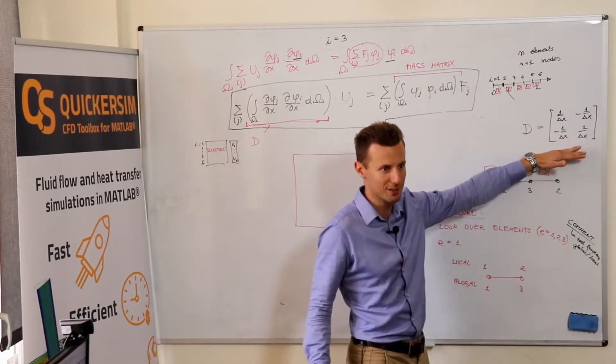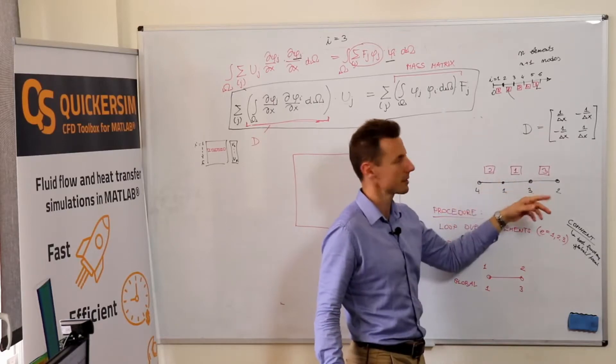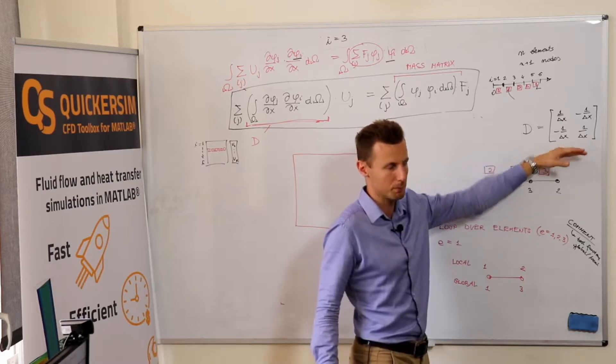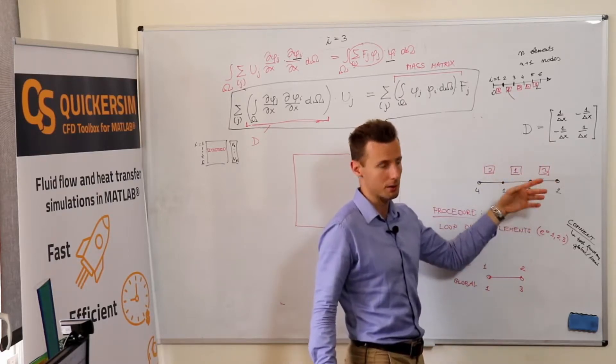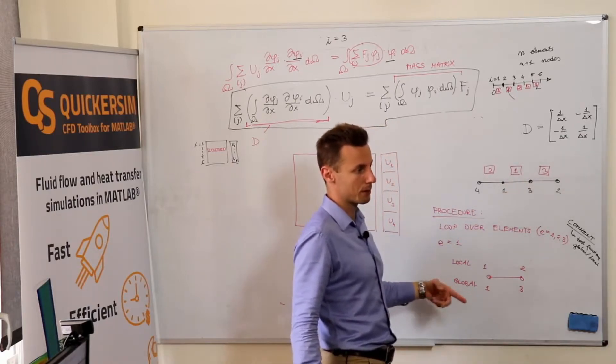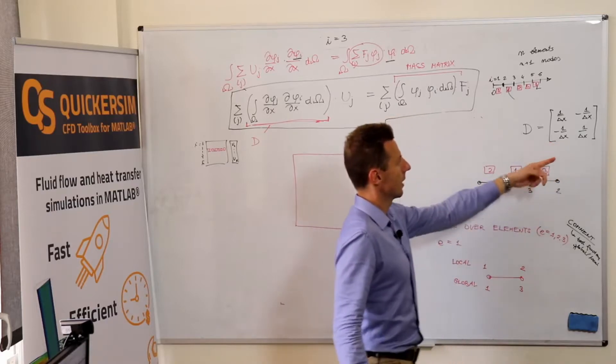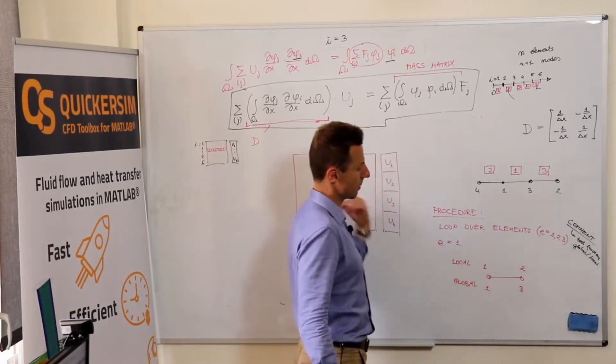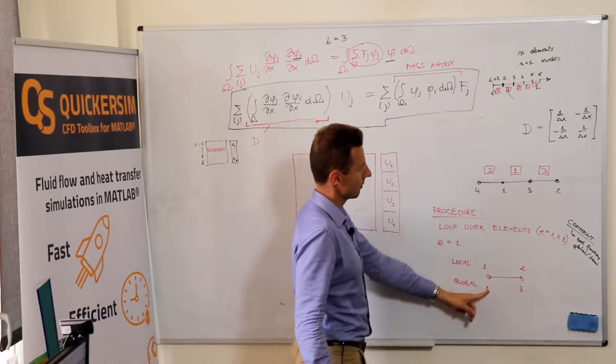We've already computed, and luckily because all our elements are exactly the same, then the local matrices are exactly the same for each element. But if you've got like a changing size or whatever else, then clearly for each element you need to compute the local matrix. And what we need to do is we need to plug it appropriately to the equations.